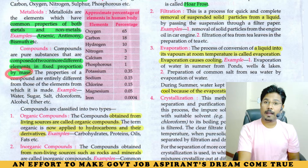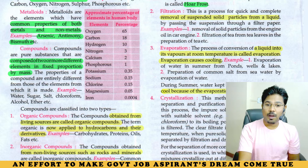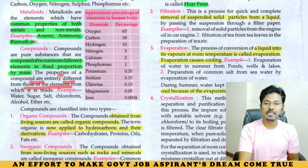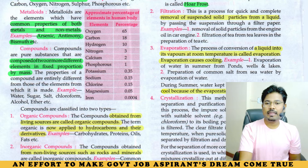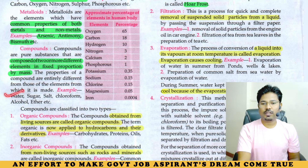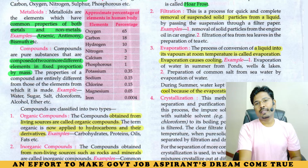The properties of a compound are entirely different from those of the elements from which they are made. For example, water, sugar, salt, chloroform, and so on.